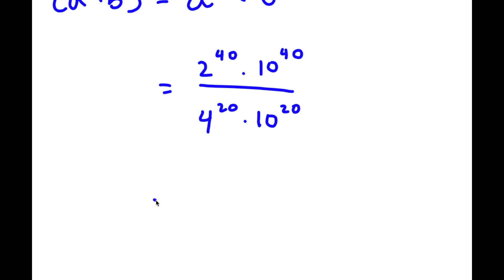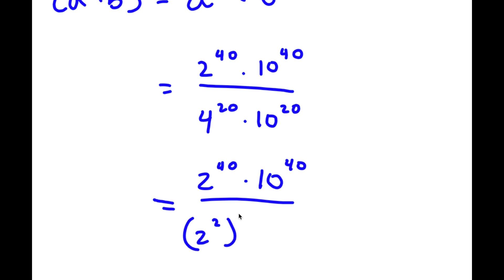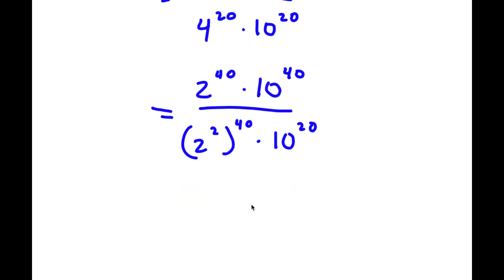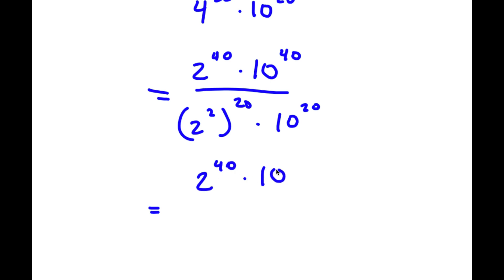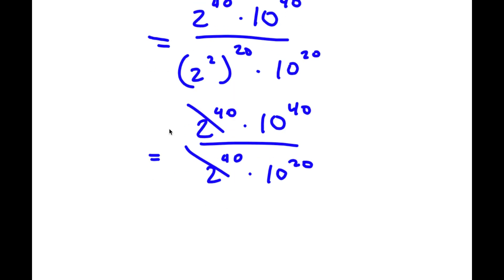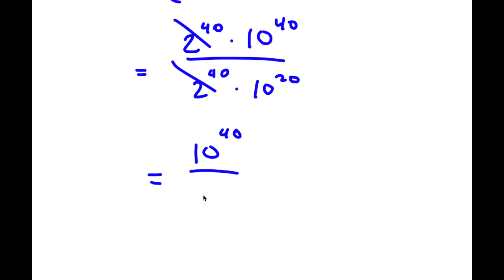Now, 4 is the same thing as 2 squared, so 4 to the power of 20 is 2 squared to the power of 20, which equals 2 to the power of 40. So I have 2 to the power of 40 times 10 to the power of 40 over 2 to the power of 40 times 10 to the power of 20. The two 2 to the power of 40 terms cancel out, and I'm simply left with 10 to the power of 40 over 10 to the power of 20.